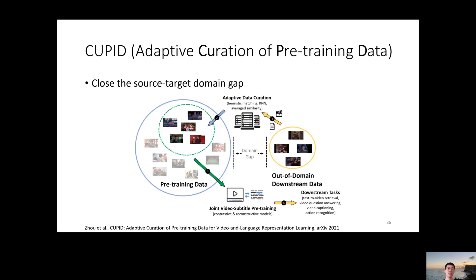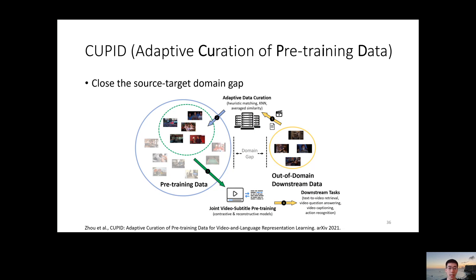The next work is Qubit, which stands for adaptive curation of pre-training data. It's a general approach to close the source-target domain gap. Given a downstream task's data, it finds similar data in the pre-training set to ensure there isn't a salient domain gap. It has been successfully applied to various models including MIL-NCE, HERO, CLIP, and VLP.